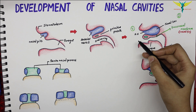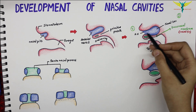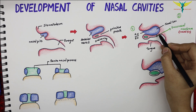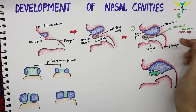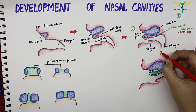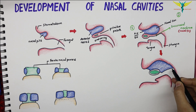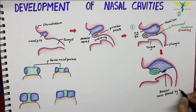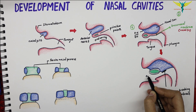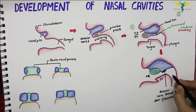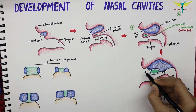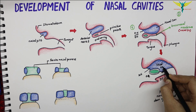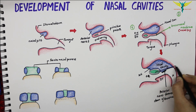After the bucconasal membrane breaks down, the nasal sac has a ventral orifice that opens onto the face — the anterior nares or external nares — and a dorsal orifice that opens into the stomatodeum, visible as the posterior opening. This forms the nasal cavity, with the green color representing the primitive palate.